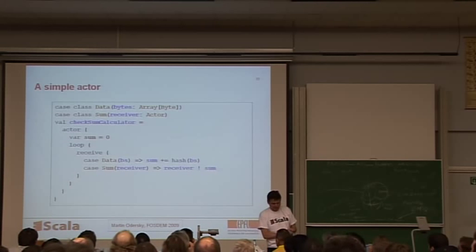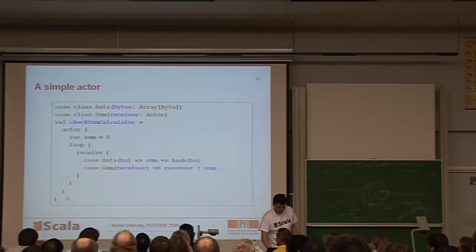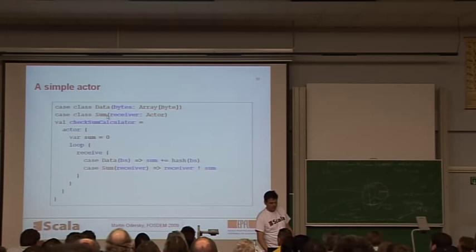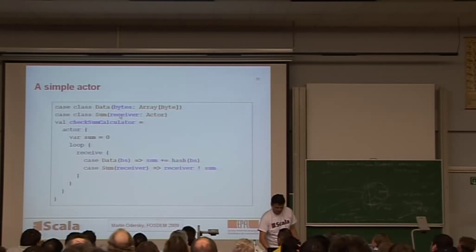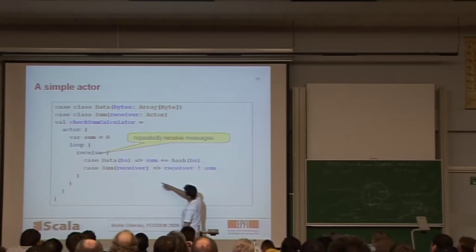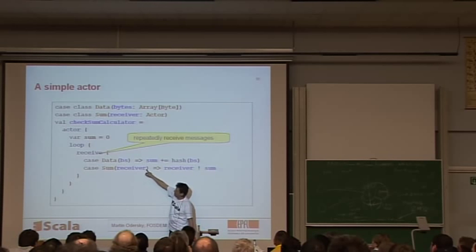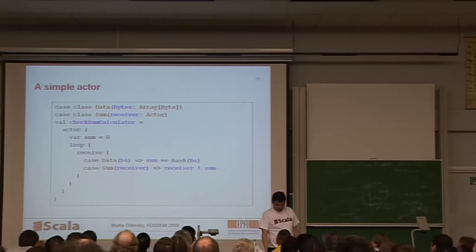So here's an example of an actor, checksum calculator. A checksum calculator, that's an actor. So actor is in this scope from here to here. So it keeps a local field called sum, a local variable sum. And then it goes through a loop, and it receives messages, which are of these two forms. So a data message sends a number of bytes, and a sum message demands that the sum is computed and returned to another actor, which is called the receiver here. So the loop, what the loop does is it receives messages. If the message is a data message with some bytes BS, then it just computes the hash of BS and adds to sum. If the message is a sum with a given receiver, then it will send the current value of sum back to receiver.